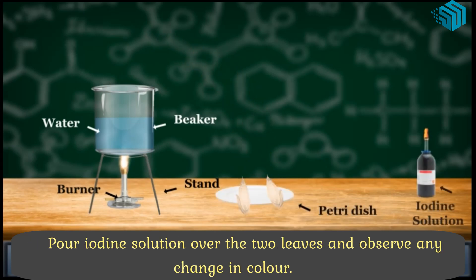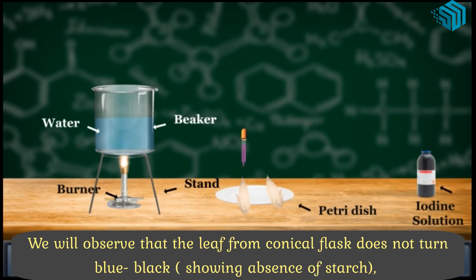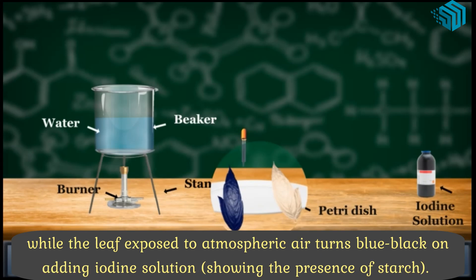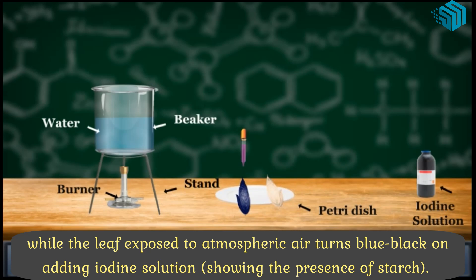Pour iodine solution over the two leaves and observe any change in color. We will observe that the leaf from the conical flask does not turn blue-black showing absence of starch, while the leaf exposed to atmospheric air turns blue-black on adding iodine solution showing the presence of starch.